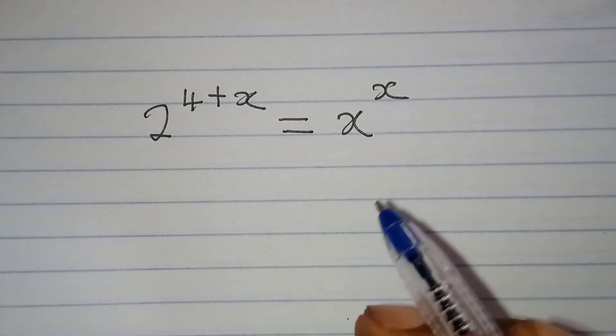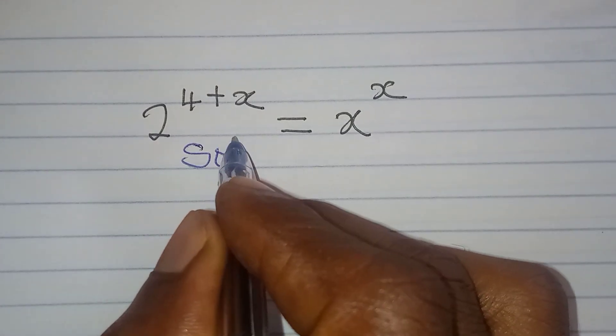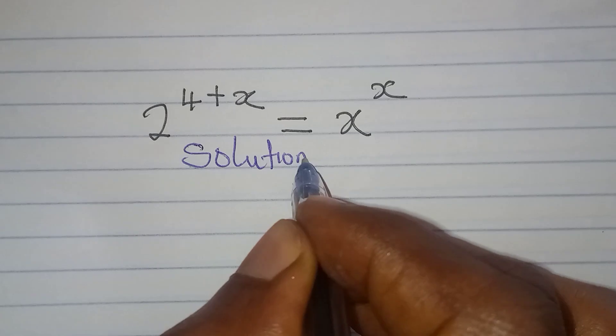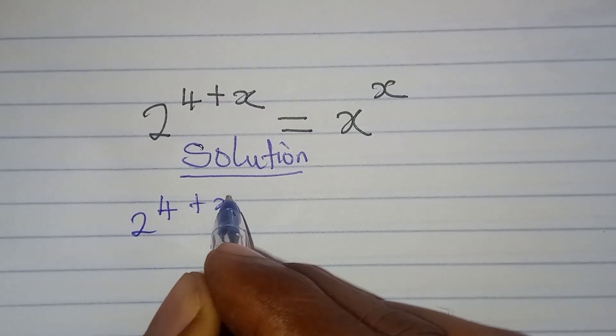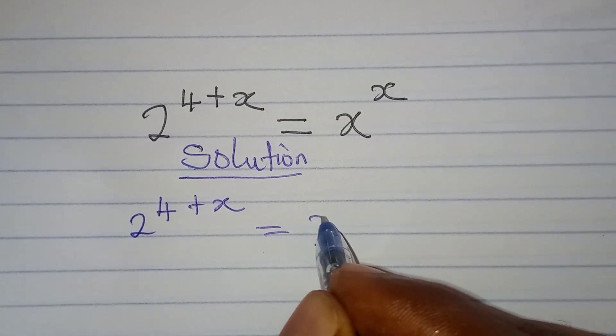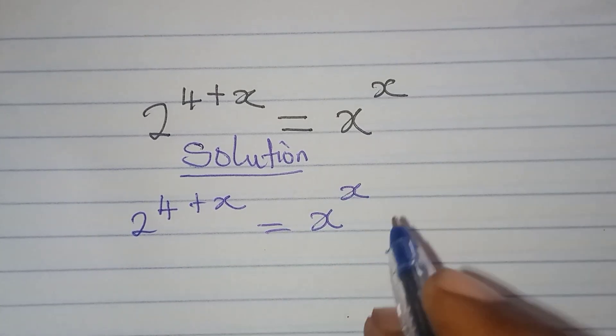Hi guys, let's work on this very quickly. We have 2 to the power of 4 plus x to be equal to x to the power of x.